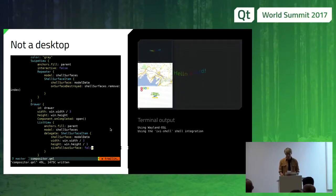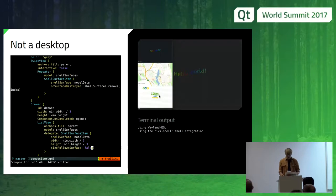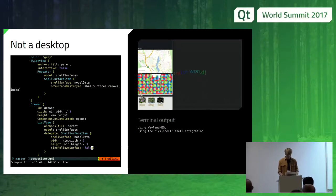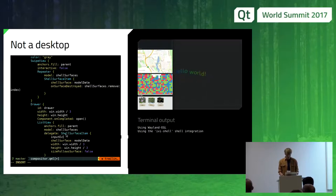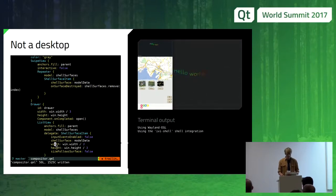Now we have a list of shell surface items. This is starting to look good. The problem is that these items are still interactive — we're actually interacting with the clients in the overview, which is not what we want. So we'll set another property: input_events_enabled to false. Now there's no interaction in the overview, and that's what we want.